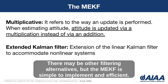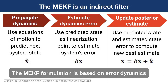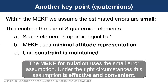The MEKF is a Multiplicative filter. By Multiplicative, we refer to the way an update is performed. When estimating attitude, attitude will be updated via a multiplication instead of an addition. This version of the Kalman filter accommodates nonlinear systems. The MEKF is an indirect filter — instead of propagating and updating the state directly, we estimate the dynamics error and then use this to update our current estimate. We also assume that errors are small, which enables use of three quaternion elements as opposed to four. The MEKF uses a minimal attitude representation, and the unit constraint is maintained.